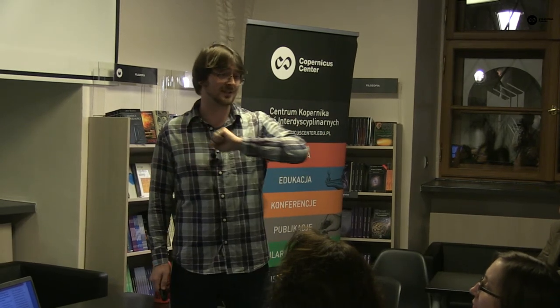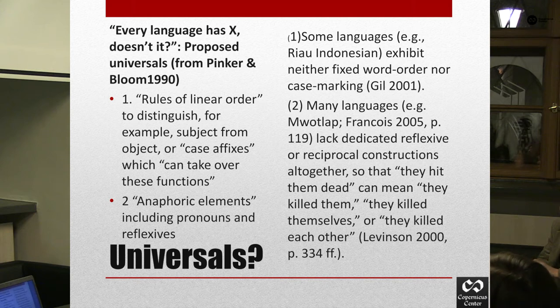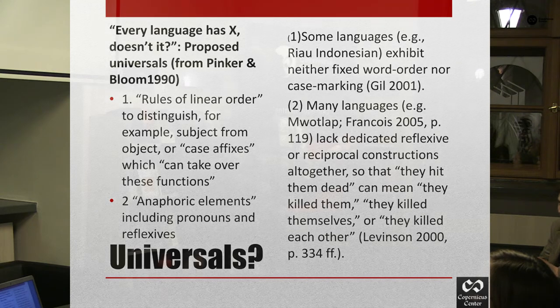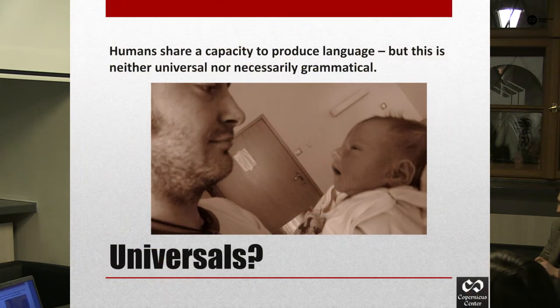There's a common idea that certain things appear in all languages — things like subjects and objects. There aren't. You can always find exceptions. There are grammatical structures which exist in one language but don't exist in others. What we do have, which is universal, is the ability and the need to communicate and to use language to do so. This is what separates us from other mammals.